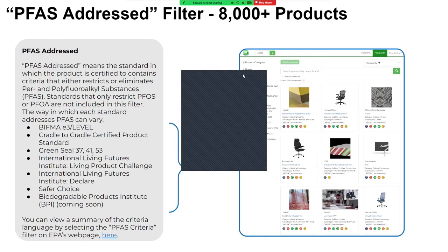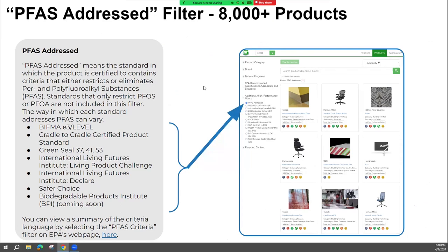The other thing we can do using SF Tool product search is filter for products that are actually addressing PFAS — poly­fluoroalkyl substances, which is why we always say PFAS instead of that long mouthful. We're able to show you which products in the system actually comply with EPA's definition of which eco-labels address PFAS.